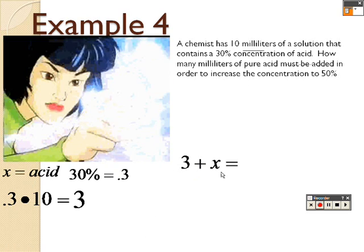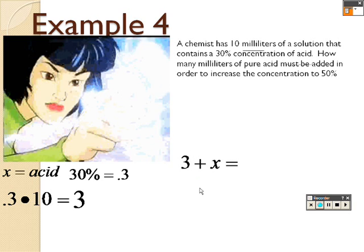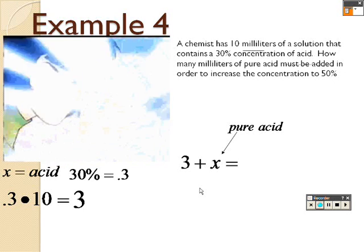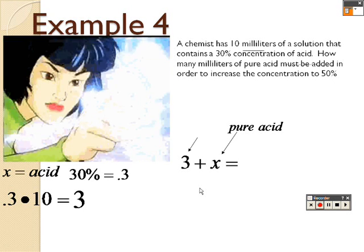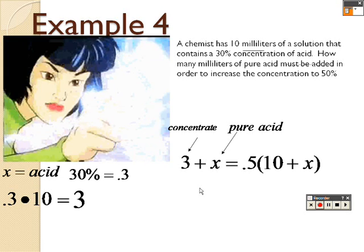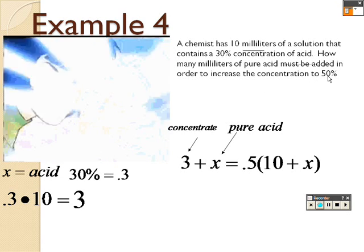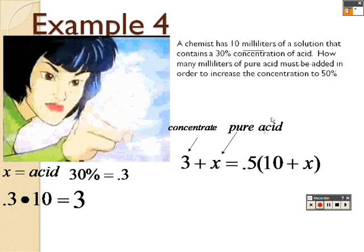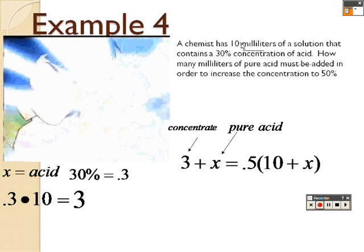So 3 plus some amount of acid that I don't know, that's the pure acid, equals... Remember, 3 is the concentrate. That's what we're figuring out. Equals 50%, that's where I'm getting this 0.5.